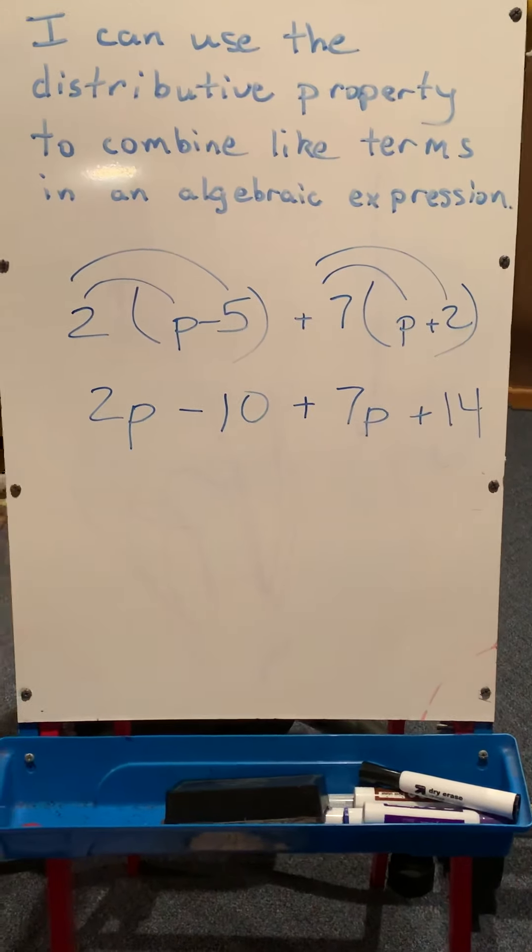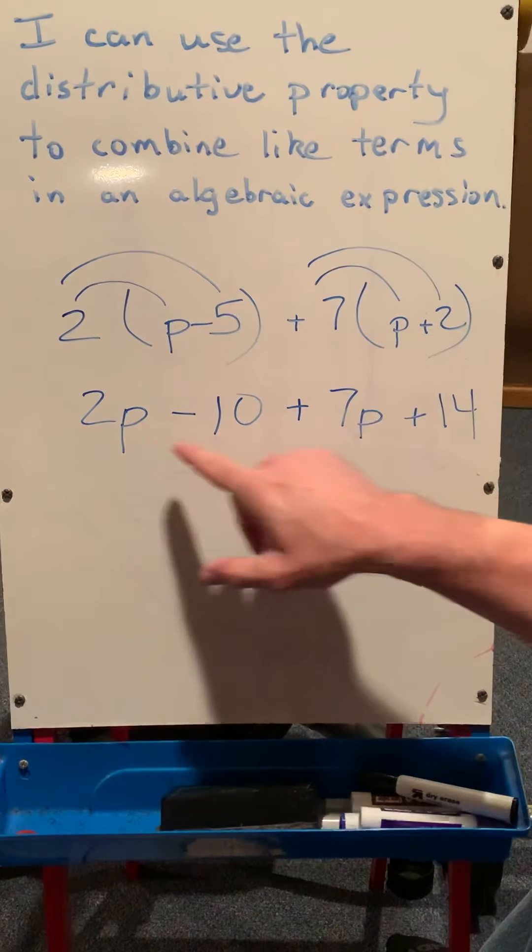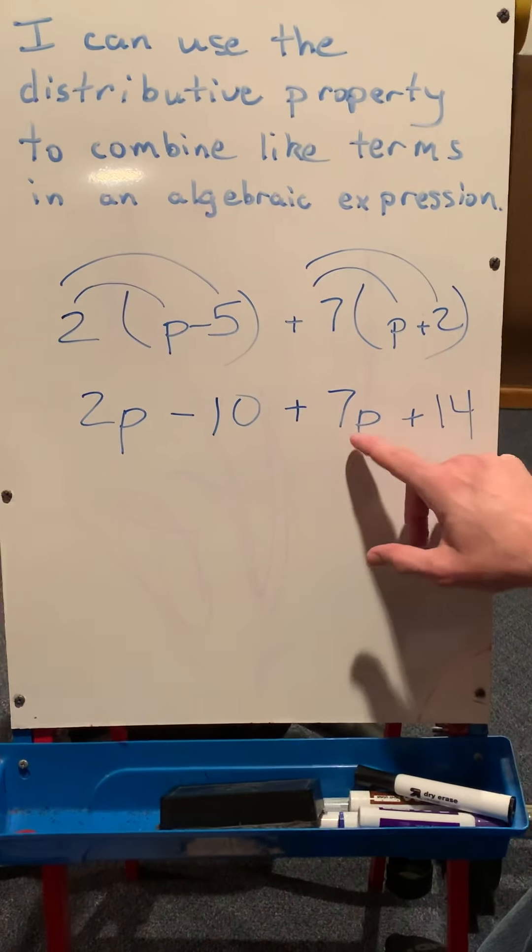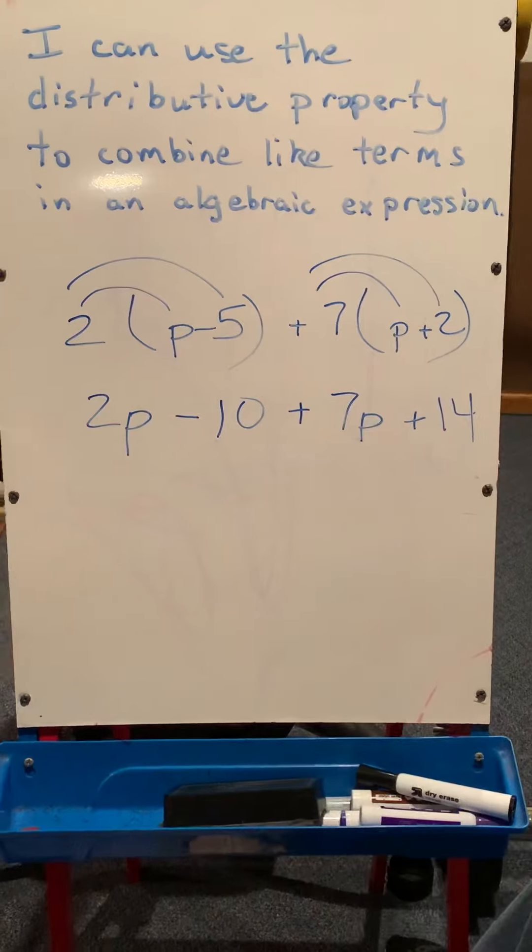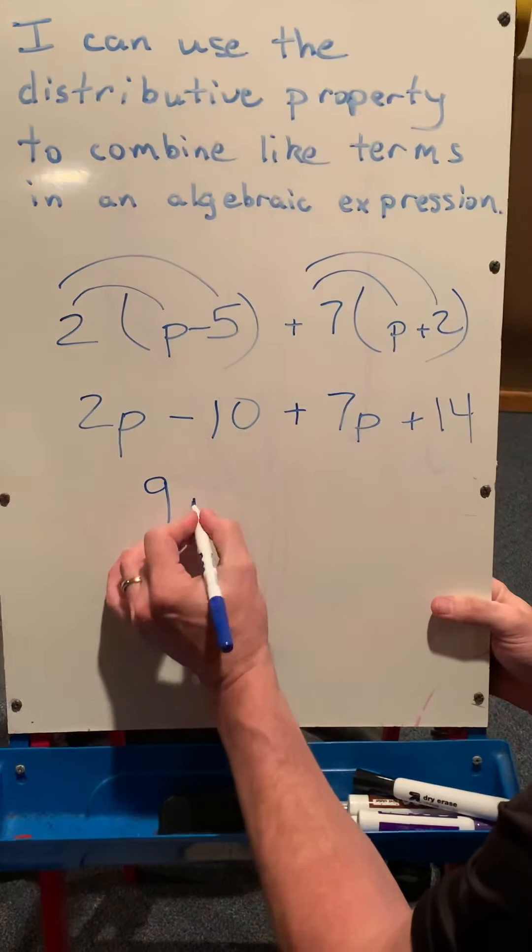All right, so this situation is just a little bit different than the last one I showed you. The p's, when I combine those, that's relatively similar. I have a positive 7p's, or 7p's, and a positive 2p's. So I have a total of 9 of those p's. So 9 times p, or 9p.